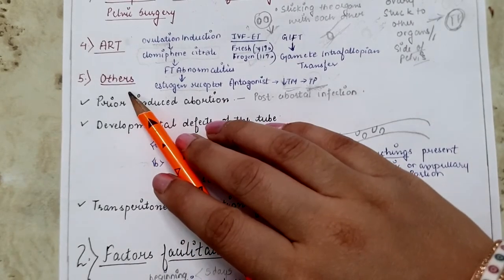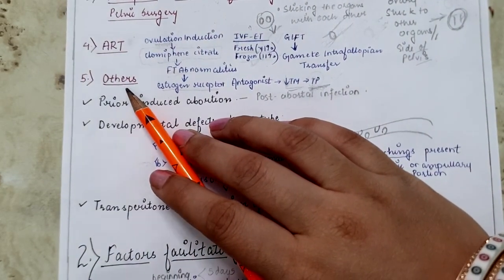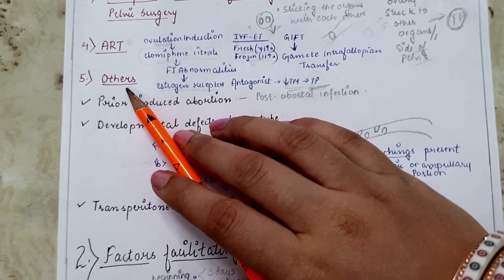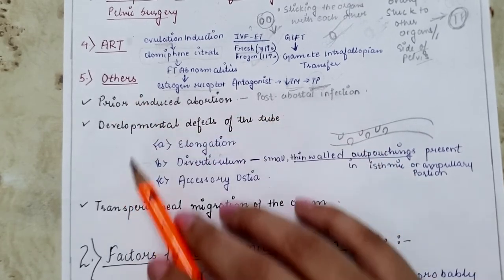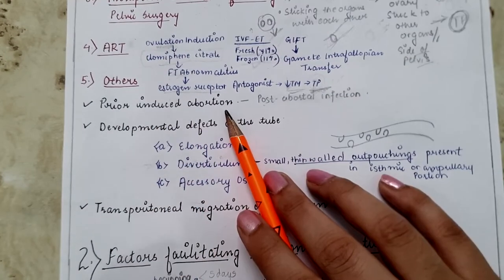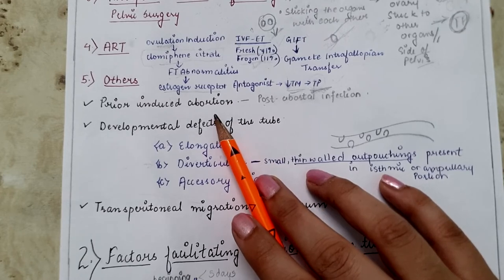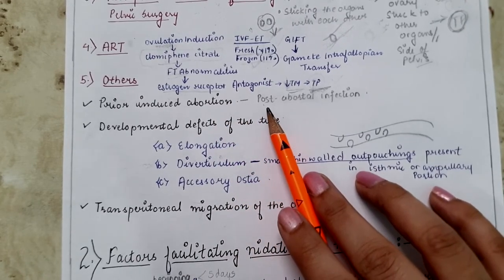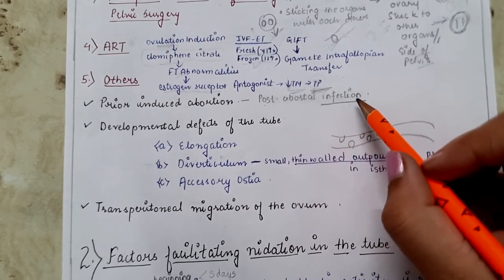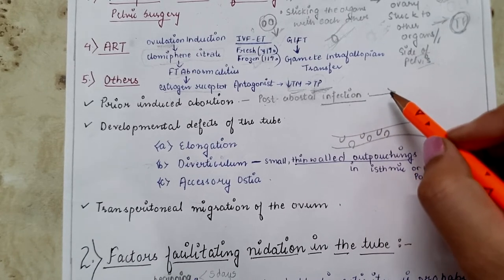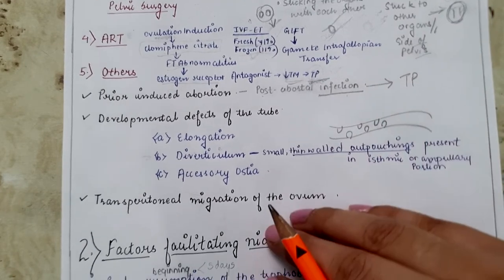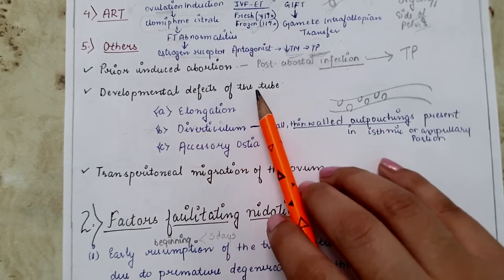Other factors include prior history of ectopic pregnancy, which increases chances of recurrence, and prior induced abortion, which may cause post-abortal infection leading to loss of cilia or narrowing of the tubal lumen.